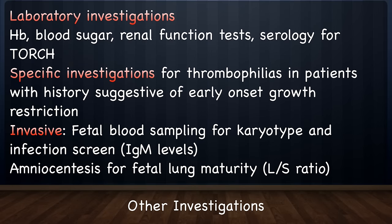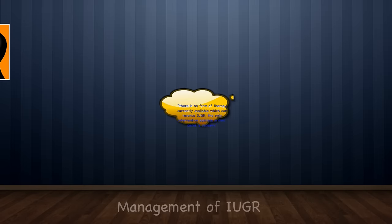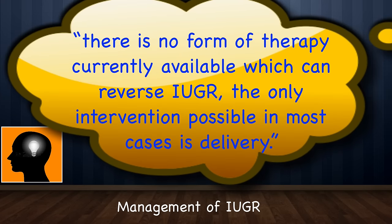Other investigations which may be done to determine the cause include lab investigations like hemoglobin, blood sugar, renal function tests, serology for TORCH, and specific investigations for thrombophilias in patients with a history suggestive of early-onset growth restriction. Invasive investigations include fetal blood sampling for karyotype and infection screen — that is, IgM levels — and amniocentesis for fetal lung maturity, that is, L/S ratios.